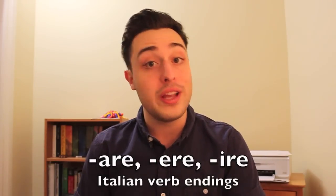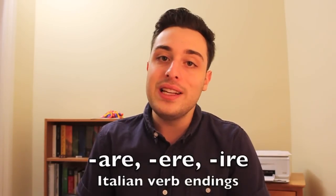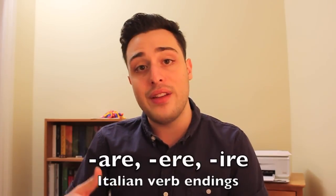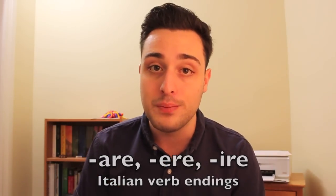As you guys already know from having watched my past Learn Italian Grammar Basics videos — if you haven't seen them yet, the links are down below — there are three types of verb endings in Italian. A verb will either end in -ARE, -ERE, or -IRE. Depending on what a verb ends in is going to dictate how that verb gets conjugated in every verb tense of the language.